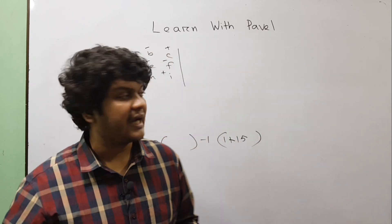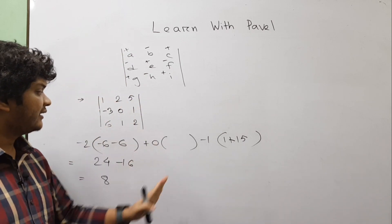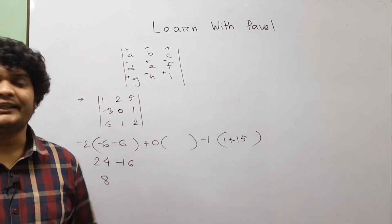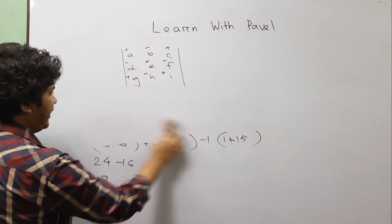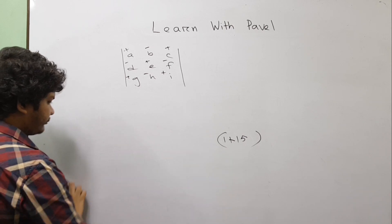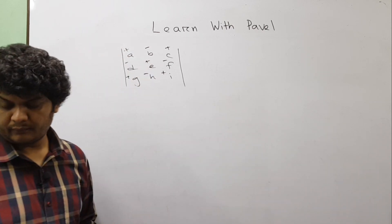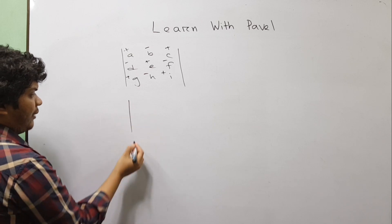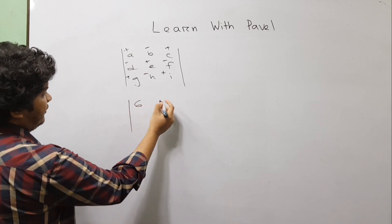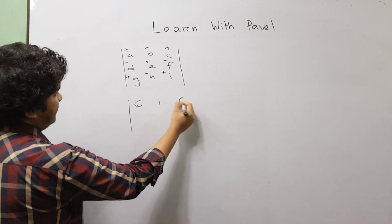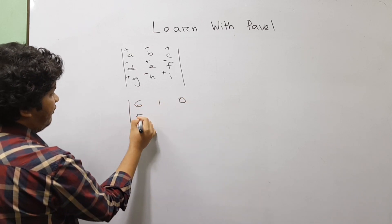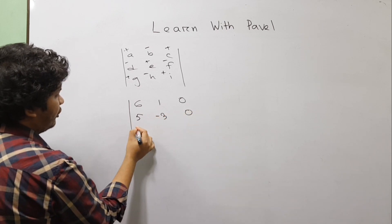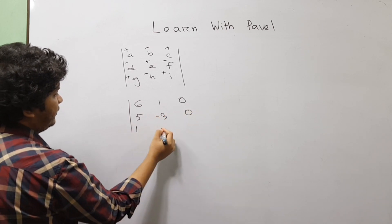I will solve this problem. I will see that 0 is 0. The matrix is: 6, 1, 0; 5, 3, 0; 1, 2, 3.